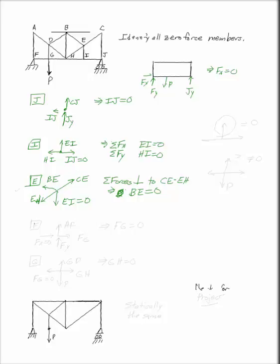Now if I keep going and look at the member at F, I have Fx, which is equal to zero, and Fy, and Fg, and Af. You can say that Fg has to be equal to zero.